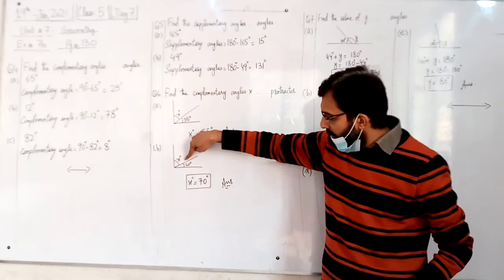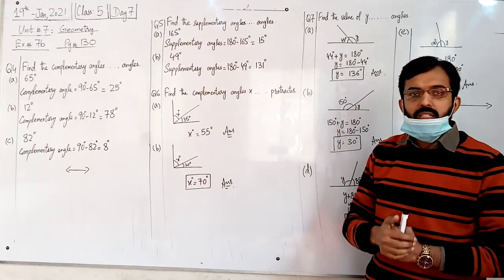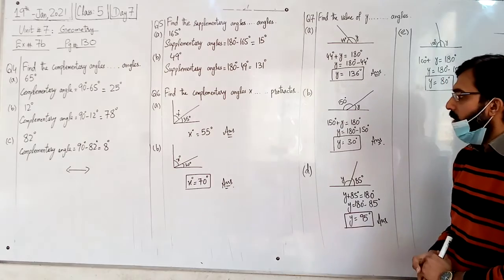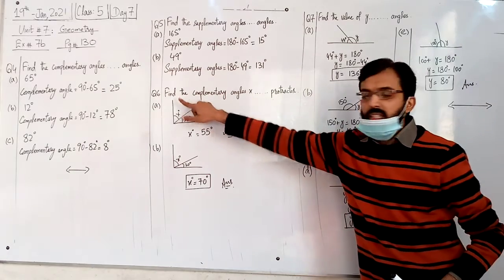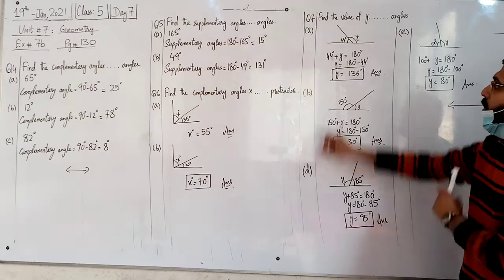And if it is 20, it is 70. 70 plus 20 is 90 degrees, x is equal to 70 degrees. So if you have the angle, x value is 70 degrees.